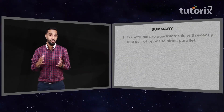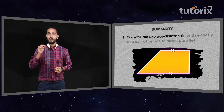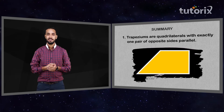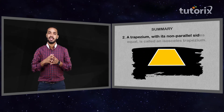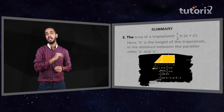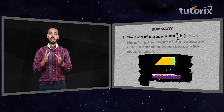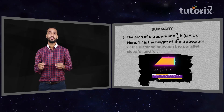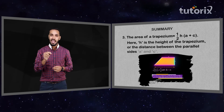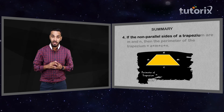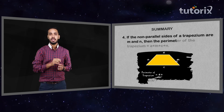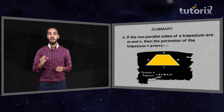If you liked that question, you're going to absolutely love the problems we created for you in the mock test. So what are you waiting for? Let's quickly summarize. In this video, we discussed the areas and perimeters of trapeziums. We saw that trapeziums are quadrilaterals with exactly one pair of opposite sides parallel. A trapezium with its non-parallel sides equal is called an isosceles trapezium. The area of a trapezium = half H × (A + C), where H is the height or distance between the parallel sides A and C. The perimeter of a trapezium = A + M + C + N, where M and N are the non-parallel sides.